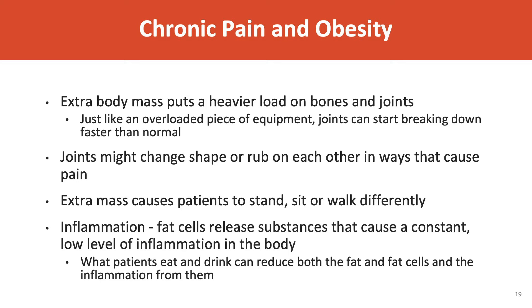Chronic pain and obesity go hand in hand. If a person has chronic pain and is overweight, each of those things makes the other worse. Body mass puts heavier loads on joints and changes how you walk and stand, aggravating chronic pain. However, chronic pain also increases cortisol levels and inflammation. That inflammation is increased if you have more fat. So the baseline level of inflammation goes up, the pain reinforces the inflammation, making it more difficult to lose weight, and the weight then increases inflammation and aggravates the pain — creating a feedback loop.